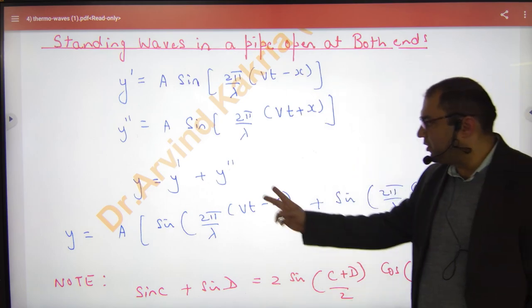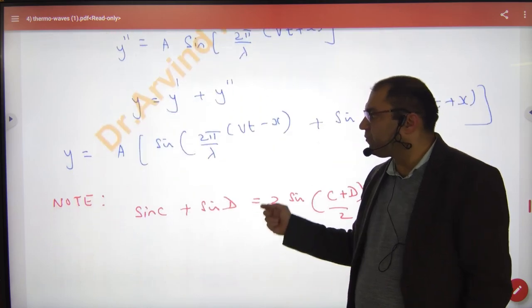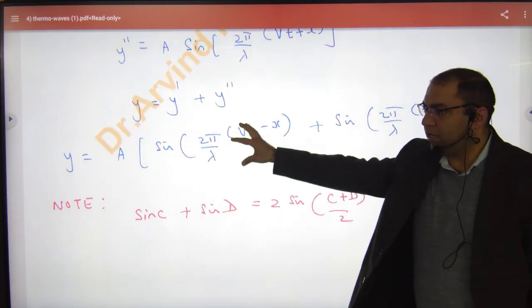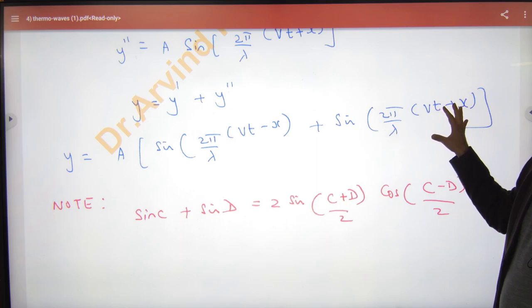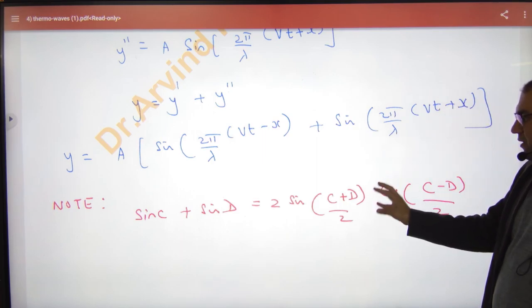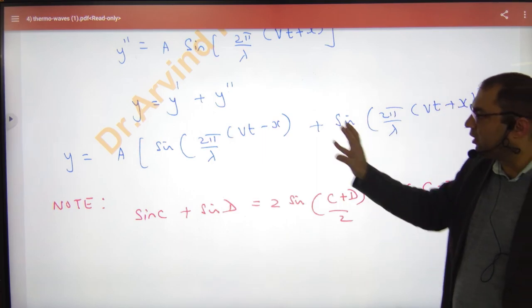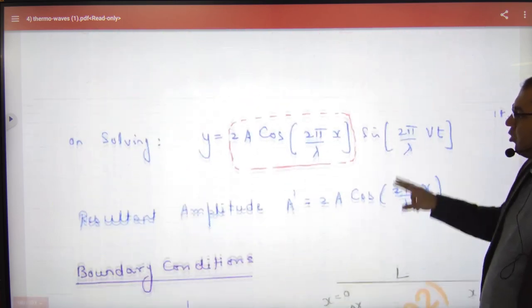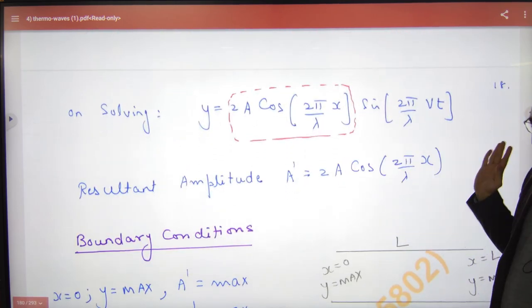Then the superposition will be coming and going waves. So again, medical students, the difference: sinc plus sind, formula 2 sinc plus d by 2, c minus d by 2. Put c and d here and write, on solving, the answer will be answered.